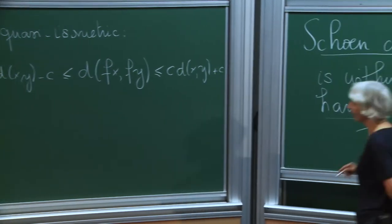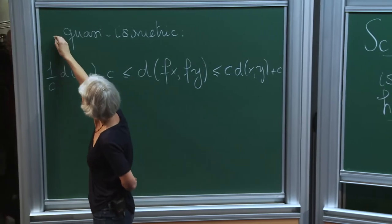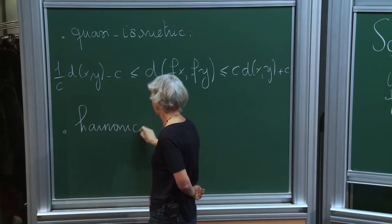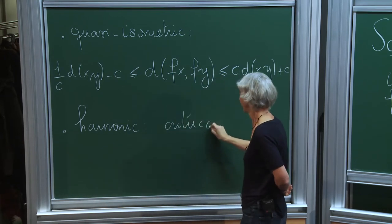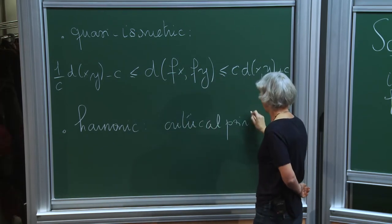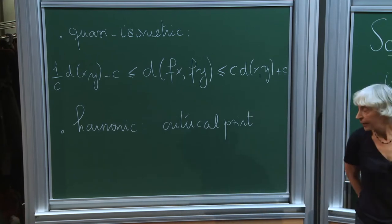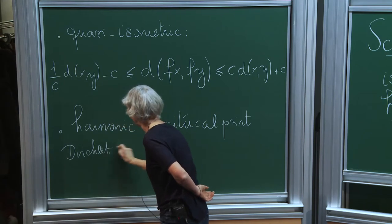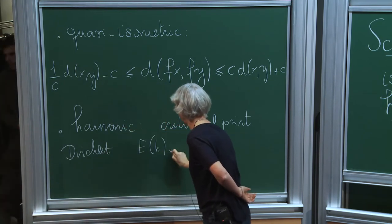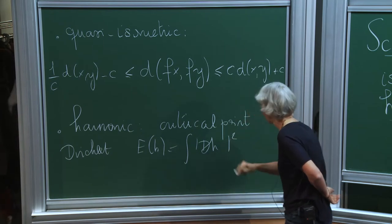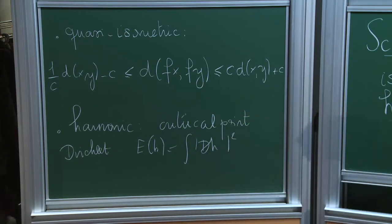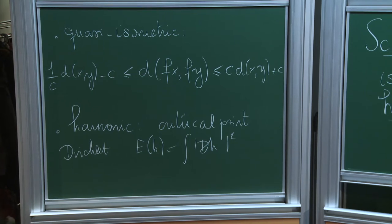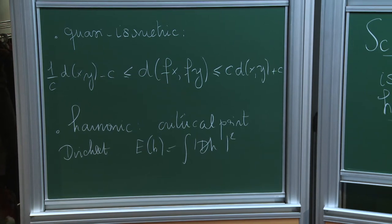What is a harmonic map? A harmonic map is a critical point for the Dirichlet energy integral. And as far as smooth maps are concerned, a map is harmonic if it is a solution of a certain elliptic PDE.